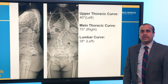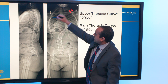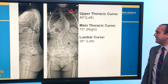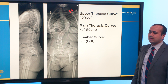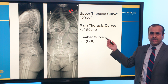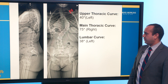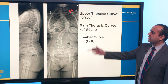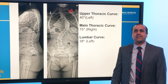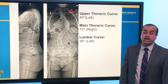These are her radiographs. This is her PA radiograph, and this is her lateral. As you can see on the PA radiograph, she has a pretty significant main thoracic curve of 75 degrees to the right, a 40-degree upper thoracic curve, and a 38-degree lumbar curve. In addition, as is common in AIS, she had loss of her thoracic kyphosis, and her thoracic spine was actually lordotic.